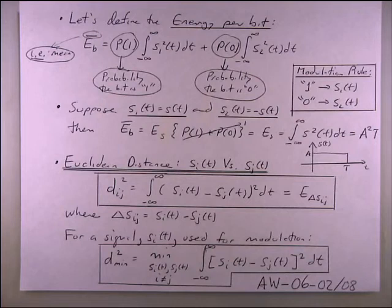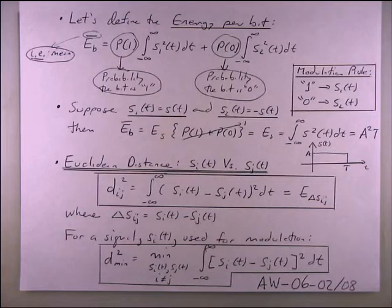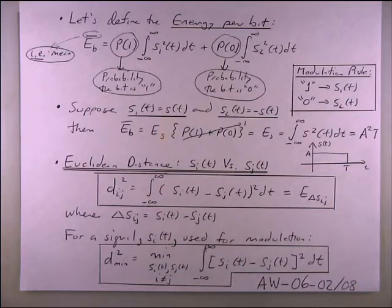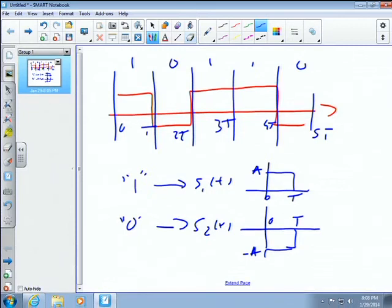Energy is a loose definition — there's the radio processing energy, the power supply, coding energy, and so on. But let's just focus on the energy in the transmitted waveform itself. The way we calculate the average bit energy involves Euclidean distance. Let's derive on the board what these quantities are.